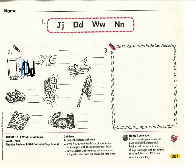Next picture. I see a Jeep. What sound do you hear at the start of Jeep? J. What letter makes the J sound? J says J. Write a capital J and a lowercase j on the handwriting line. Make sure your capital J reaches all the way from the hat to the shoe, and your lowercase j stays below the belt.